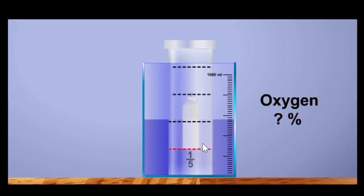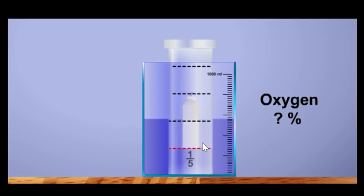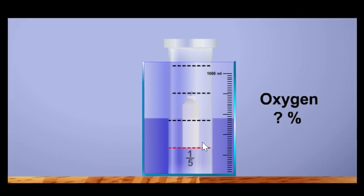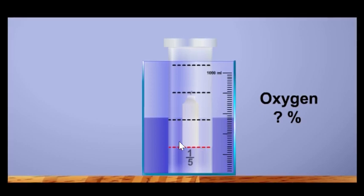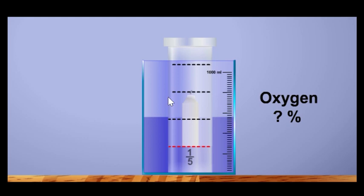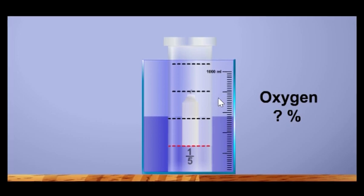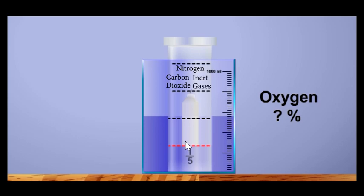Other gases such as nitrogen, carbon dioxide, and inert gases are not used up during combustion, and this space is filled up with other gases such as nitrogen, carbon dioxide, and inert gases.